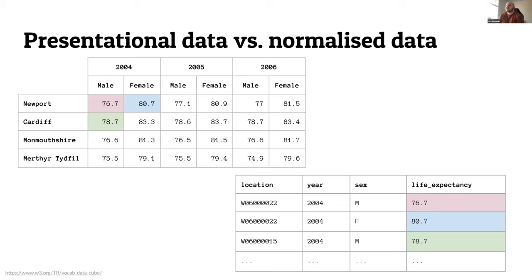On screen, we've got an example of normalization in practice. At the top left is a cross-tabulation commonly seen in government statistics — locations on the left, double headers with years going across, and then a breakdown into male and female. The normalized view takes that wide dataset and makes it long, with many rows instead of many columns. We have a location column, a year column, a sex column, and a life expectancy column. That representation can be read straight into statistical software like R or Python and you can begin operating on the data right away — no pre-wrangling required.